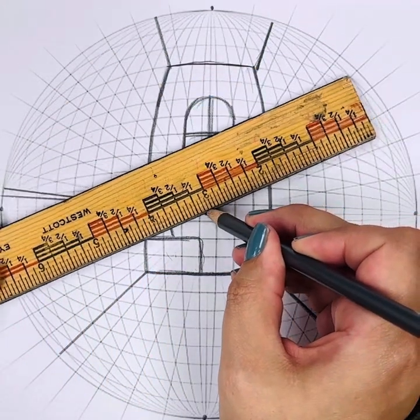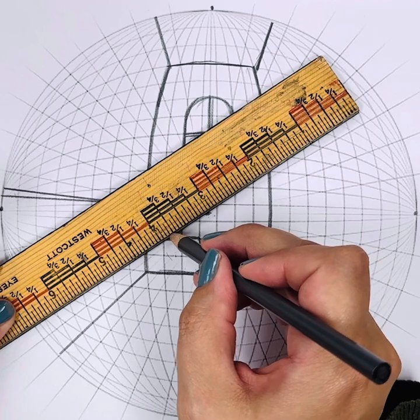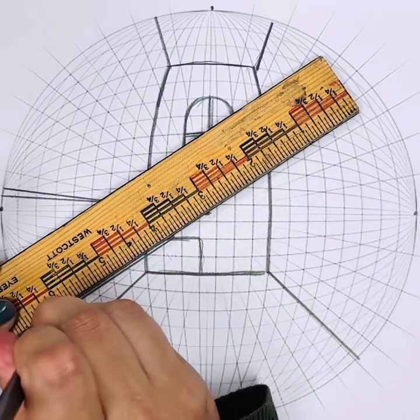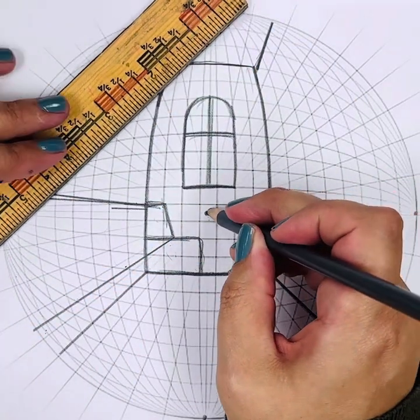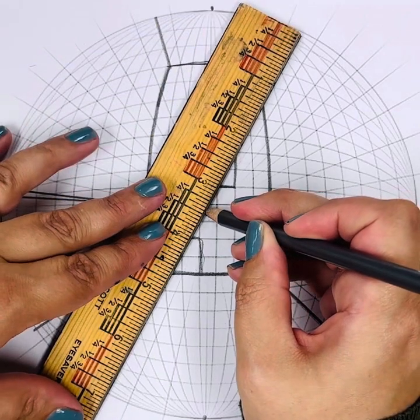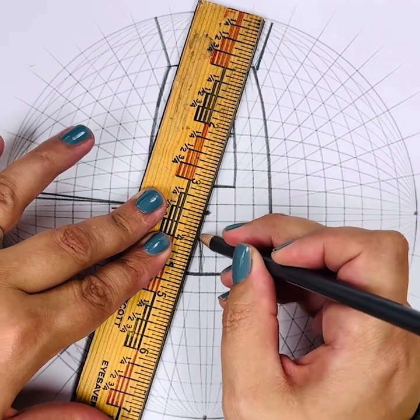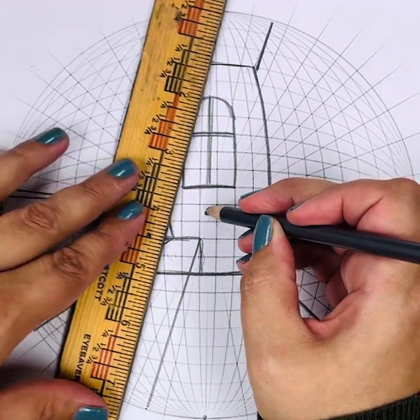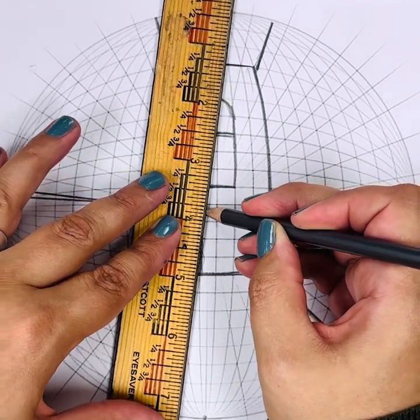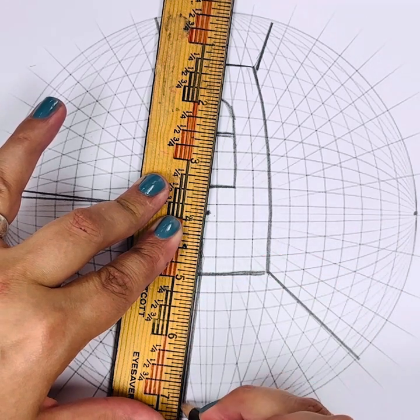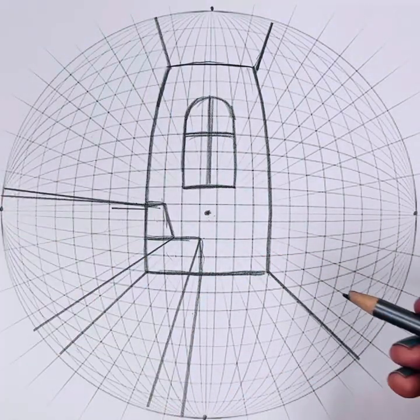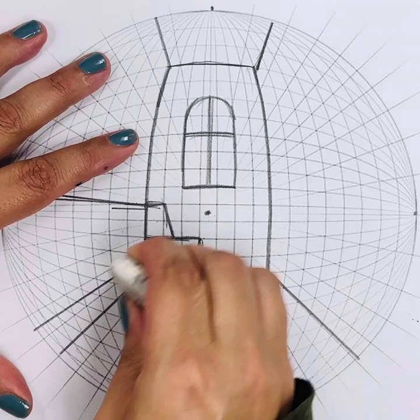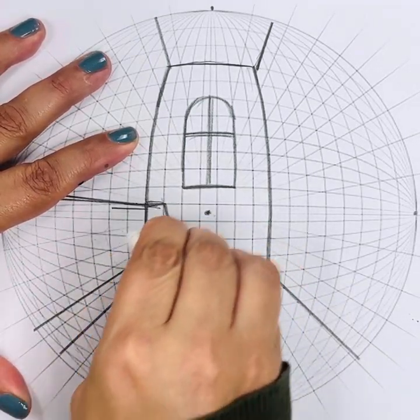Go from here to this point and out. From here to that point, and then out. Then from here to this point, and out. Okay, so I'm going to erase a little bit so it hopefully makes a little more sense.